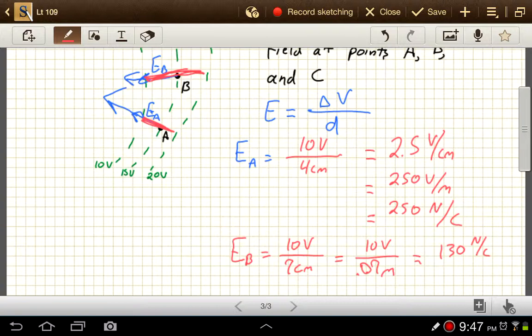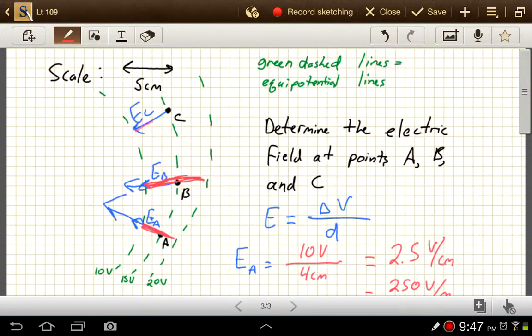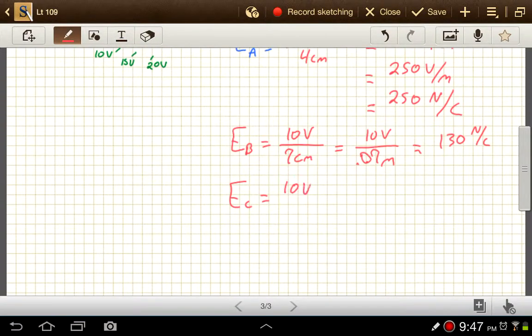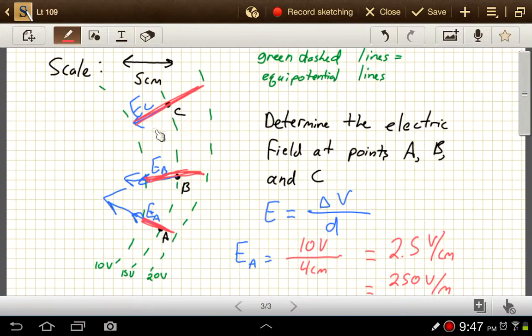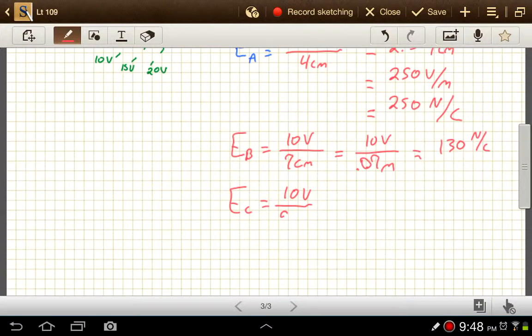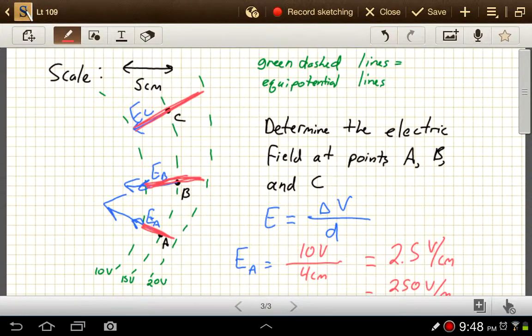And then for EC, now we're looking at this distance. Still, 10 volts difference between those two points. And that distance, we've got 1, 2, 3, 4, 5, 6, 7 over. 1, 2, 3, 4 up, so maybe 9 all together, something like that. 9 centimeters. So this is 10 volts over .09 meters. So that's gonna be like 110 newtons per coulomb. And I'm just making rough estimates on the math here. But we can see anyway that the farther away these equal potential lines get, the more this distance is going to increase. And so the smaller the value of the electric field will become.